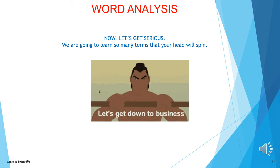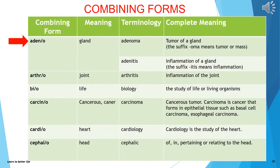Since you have mastered the components of medical terminology, now let's get serious. We are going to learn so many terms that your head will spin. These are the combining forms: adeno- means gland. Adenoma means tumor of the gland — the suffix -oma means tumor or mass. Adenitis means inflammation of a gland — the suffix -itis means inflammation.